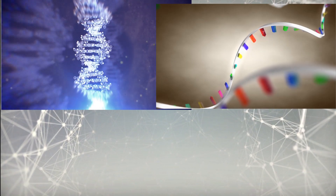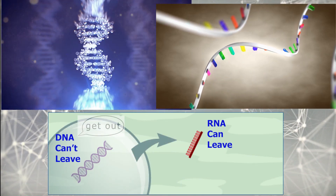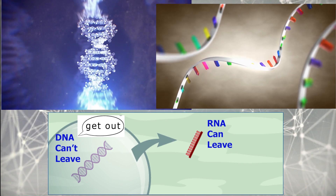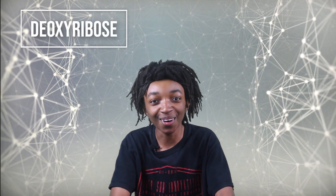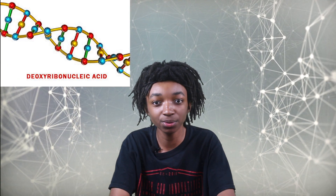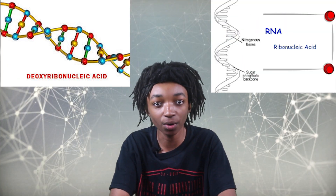Now let's get into the top differences between DNA and RNA. Number one, DNA is double-stranded while RNA is single-stranded. Since DNA is double-stranded, it is too large to leave the nucleus. RNA is single-stranded and leaves the nucleus due to its smaller size. Number two, DNA contains the sugar deoxyribose, while RNA contains the sugar ribose — hence their names: deoxyribonucleic acid for DNA and ribonucleic acid for RNA.